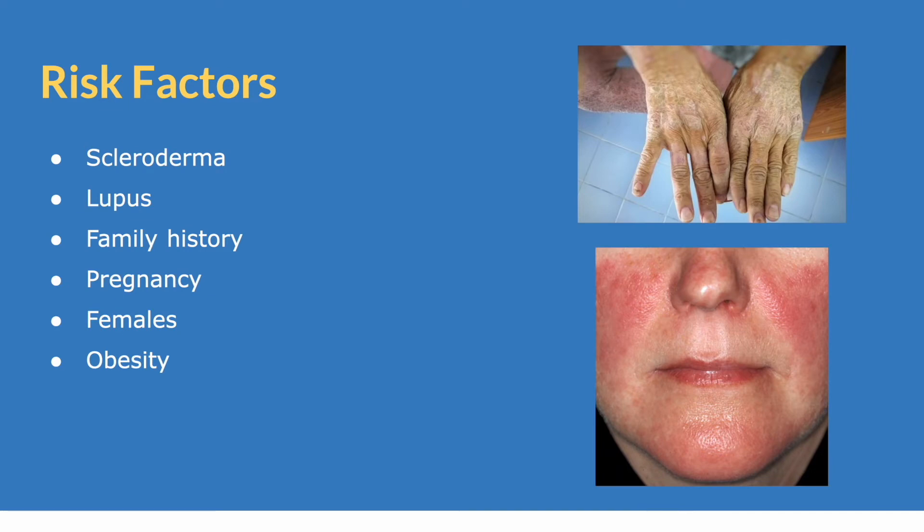Some of the major risk factors for pulmonary hypertension include scleroderma, which is illustrated in the top right picture, and lupus, which is illustrated in the bottom right picture with the malar rash. Additional risk factors include family history, pregnancy, females being more likely affected, and obesity.